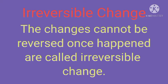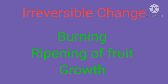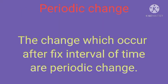Next is the irreversible change — just the opposite of reversible change. Changes that cannot be reversed once they have happened are called irreversible changes. For example, if we burn coal or paper, that change cannot be reversed. Burning, ripening of fruits, and growth are examples of irreversible changes.